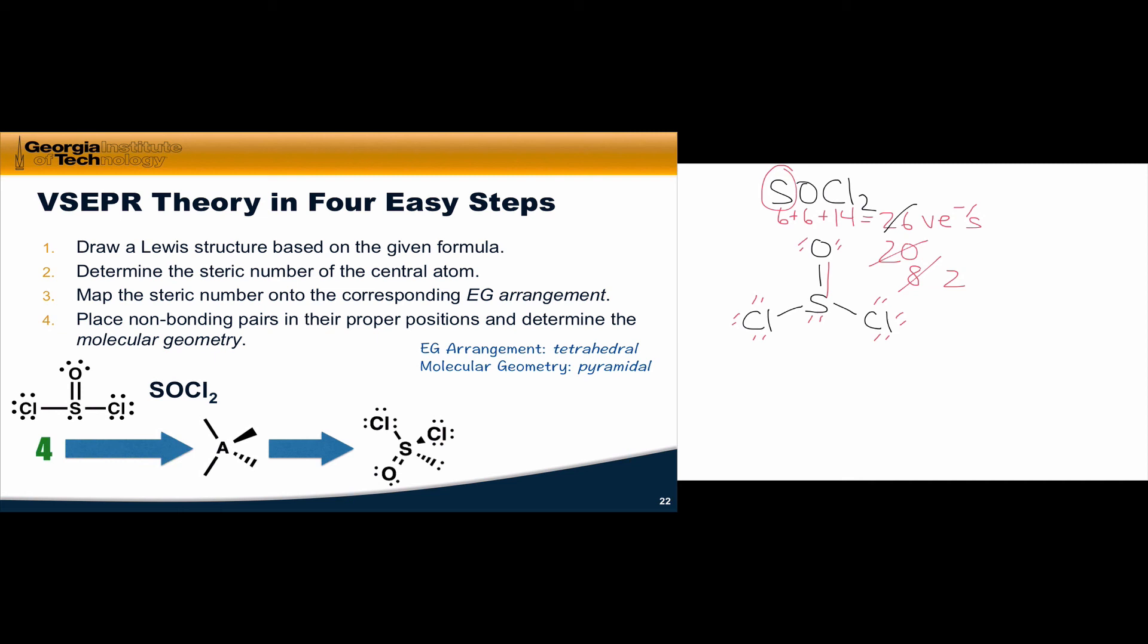So, applying VSEPR theory in general amounts to this four-step process. Draw a Lewis structure based on a formula you're given, if necessary. Determine the steric number of the central atom in step two. Map that steric number onto its corresponding electron group arrangement, and remember, there will only be one. There's only one way to put electron groups as far apart from one another as possible.